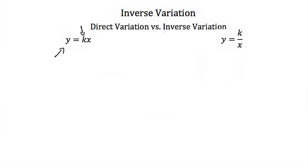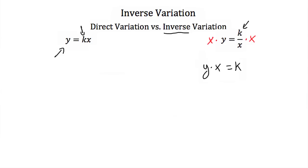An inverse variation equation is similar, except we have y is equal to k — again our constant of variation — divided by x. Here x is in our denominator. Frequently inverse variation equations are also written as y times x is equal to k, and we get that equation just by multiplying both sides of our first equation by x.